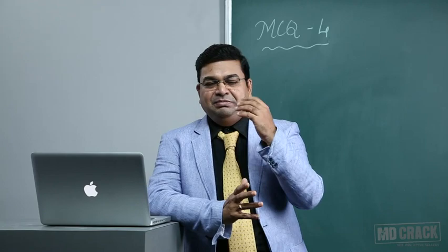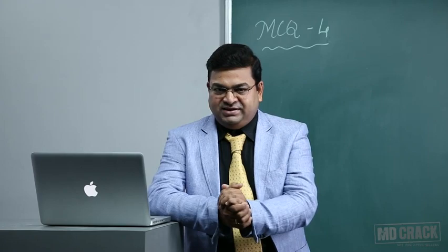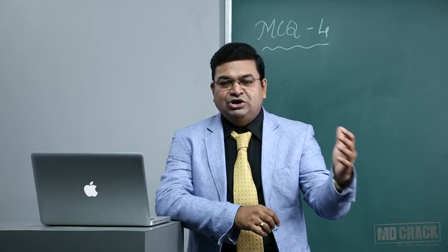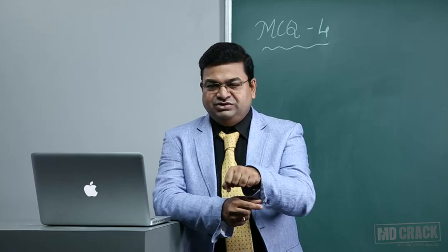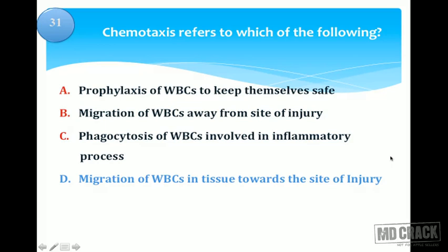Chemotaxis is chemically mediated. Chemical mediators of inflammation play an important role — they attract neutrophils from the peripheral blood to the tissues, to the site of injury, to bacterial products and toxins. The other options are incorrect: WBCs will not hide; migration away from the site is wrong; and chemotaxis is not phagocytosis — it is an entirely different phenomenon.